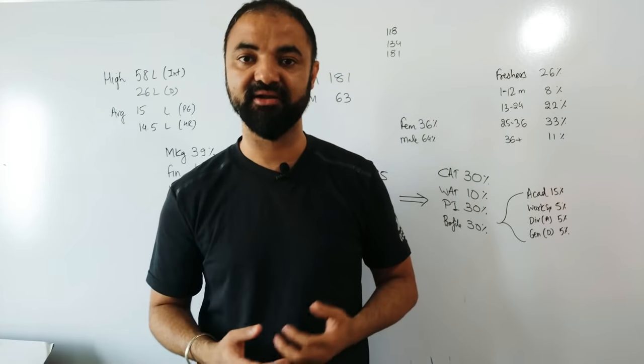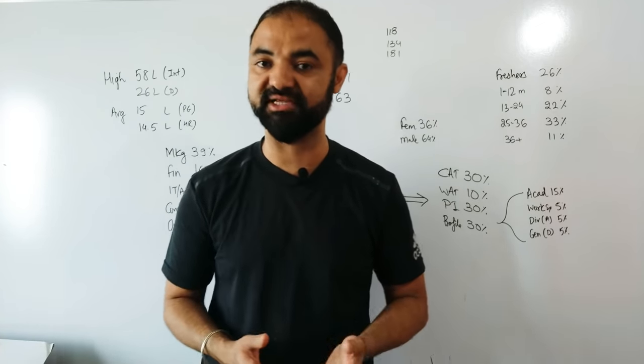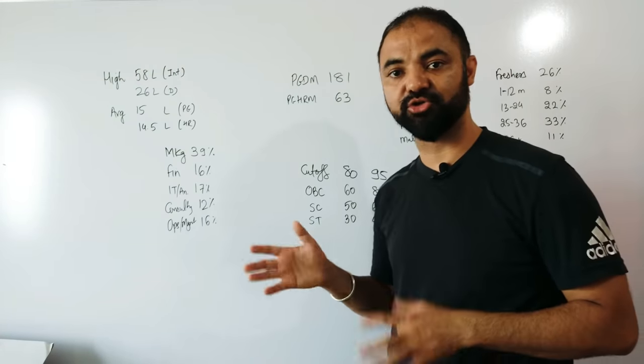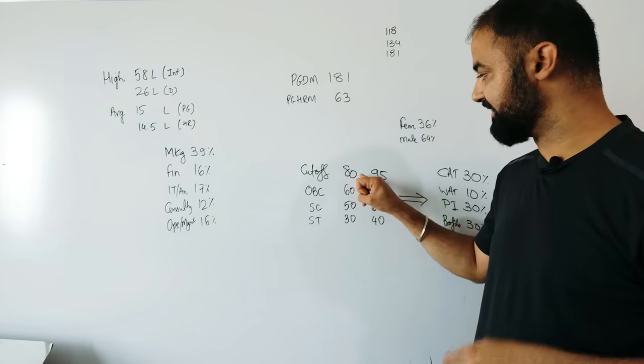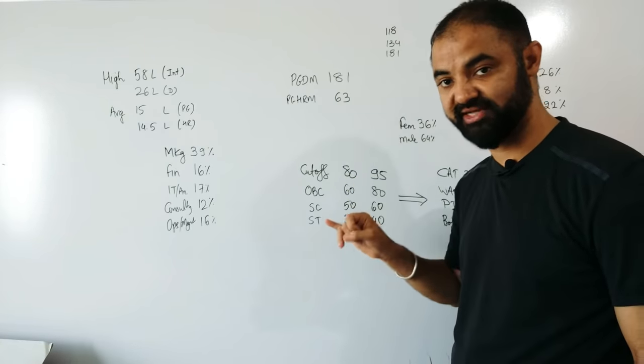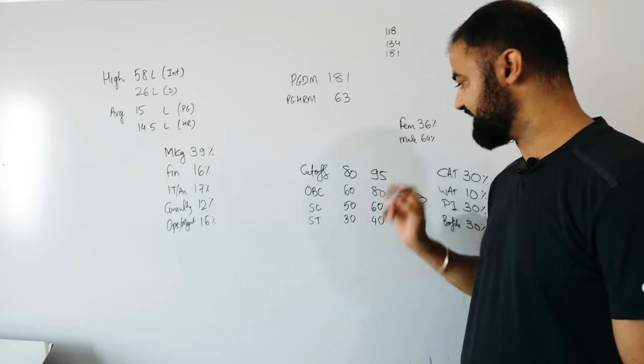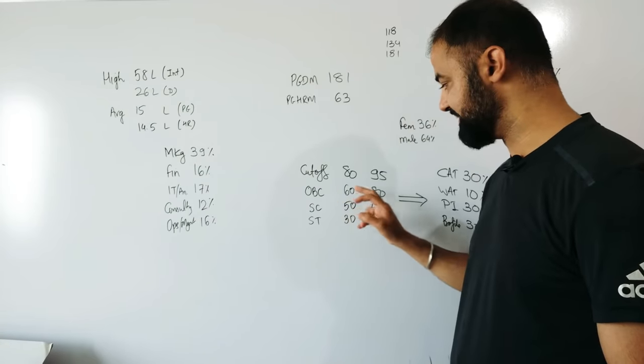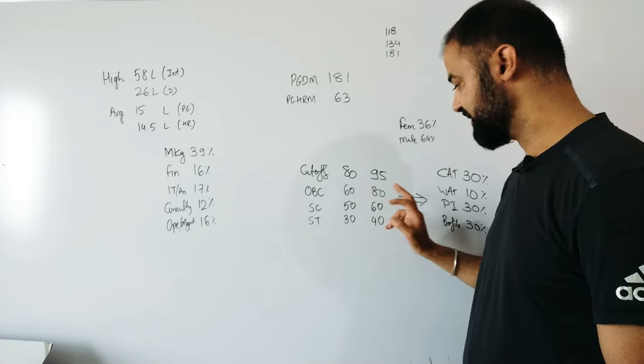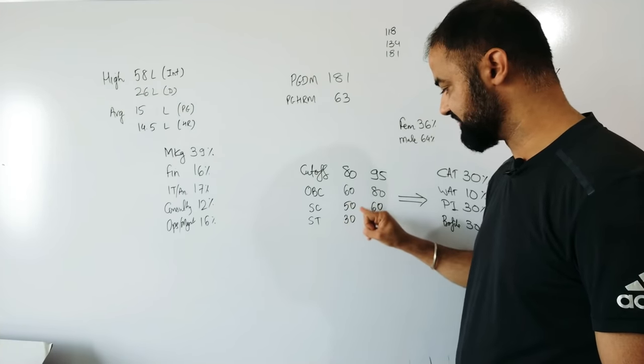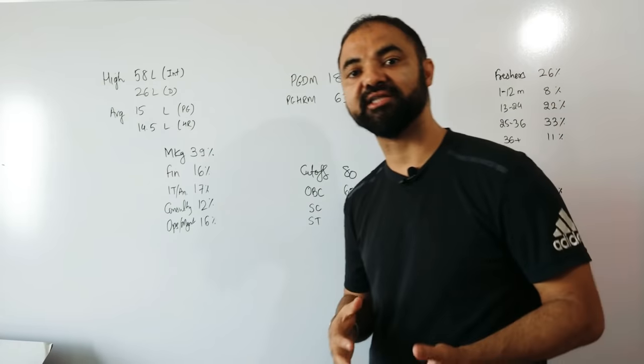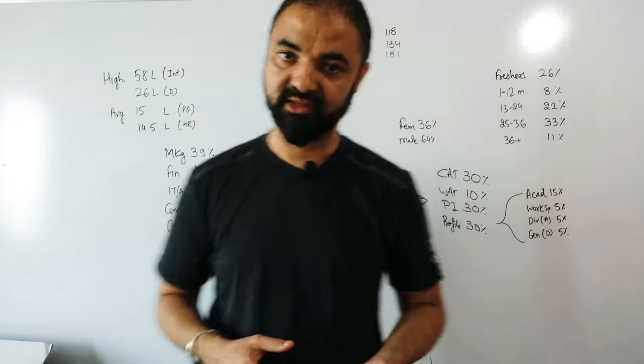Once you give the CAT exam, they will shortlist you through cutoffs. Open category cutoff is 80 percentile sectional (quant, verbal, logic) and 95 percentile overall. OBC: 60 percentile sectional, 80 overall. ST: 30 sectional, 50 overall. SC: 40 and 60. If you clear this cutoff, you will get a call from the new IIMs.